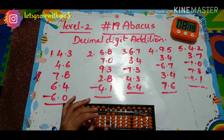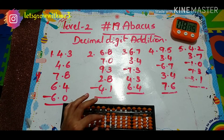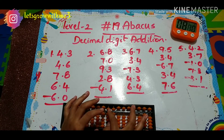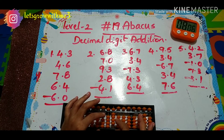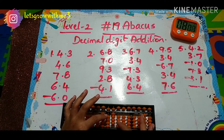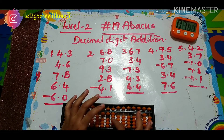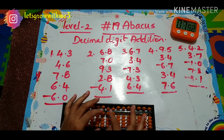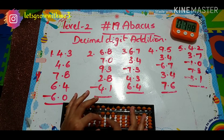Next I should add 7.8. So how to add 7 here — plus 10 minus 3. Next I must add 8 — the process is the same. If you don't have sufficient beads you have to shift to the left side of the specified column. So I'm adding 8 here: plus 10 minus 2. Next I should add 6.4 — to add 6, papa mama baby sub.